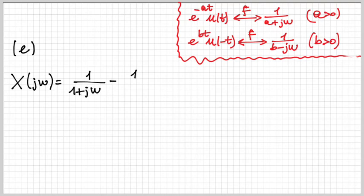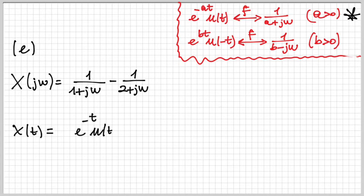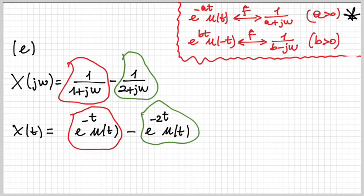Part e has X(jω) = 1/(1 + jω) − 1/(2 + jω). Both terms are first-order right-sided exponential forms, so by linearity the inverse transform is x(t) = e^(−t)u(t) − e^(−2t)u(t).